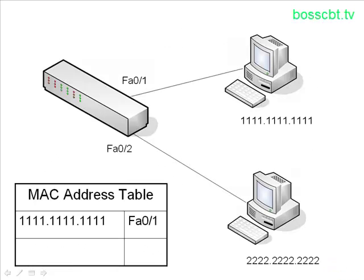We have an example network here — a switch with two PCs connected to it. These are the MAC addresses of the PCs: 111 and 222. Here we have the MAC address table of the switch. For our example, PC2 (MAC address 2222) is going to send a frame to PC1. The MAC address table on the switch already knows about PC1 — it knows not only the MAC address but also which port it lives off of: FA01, FastEthernet01.